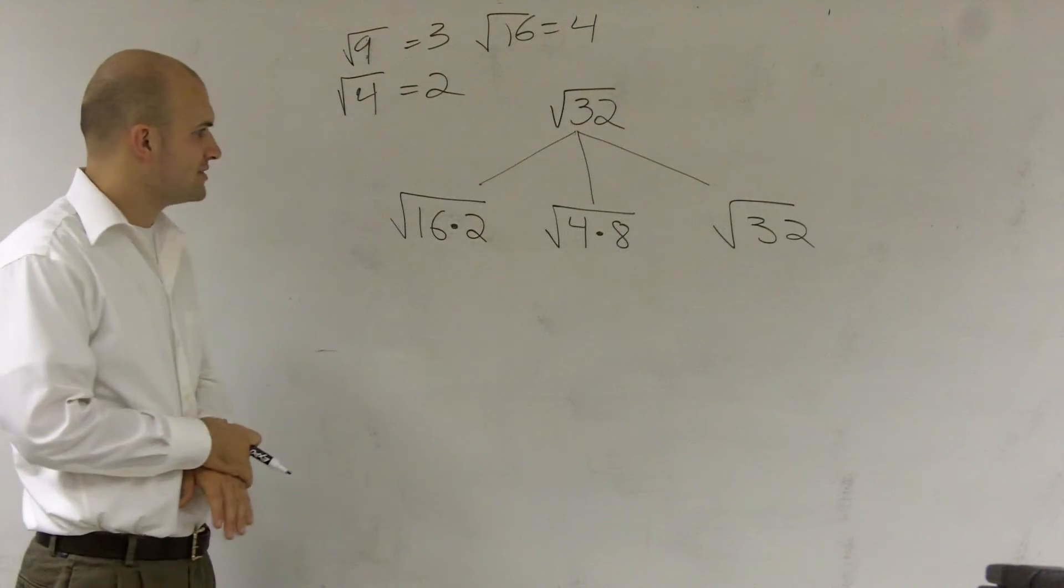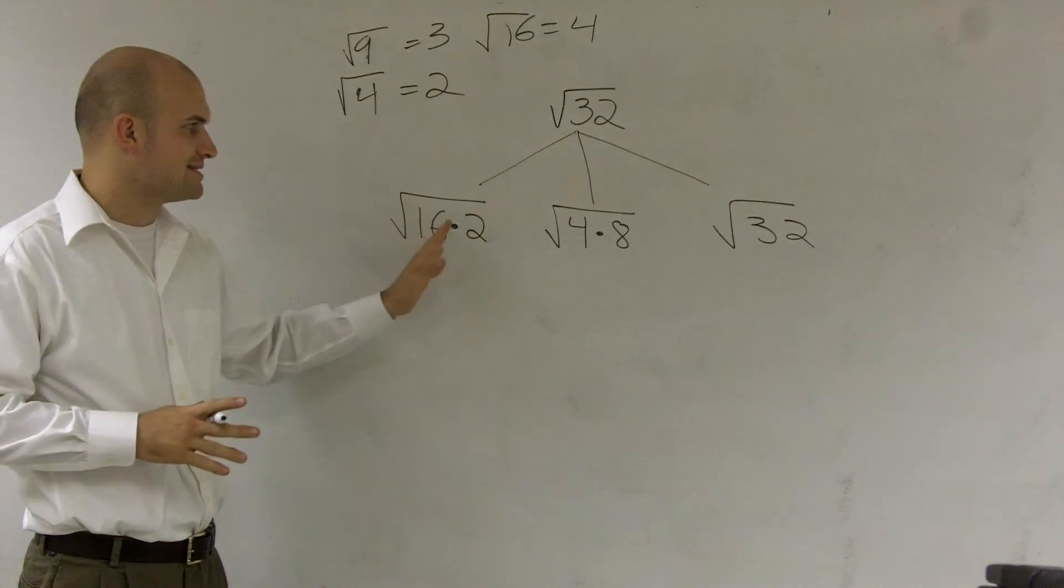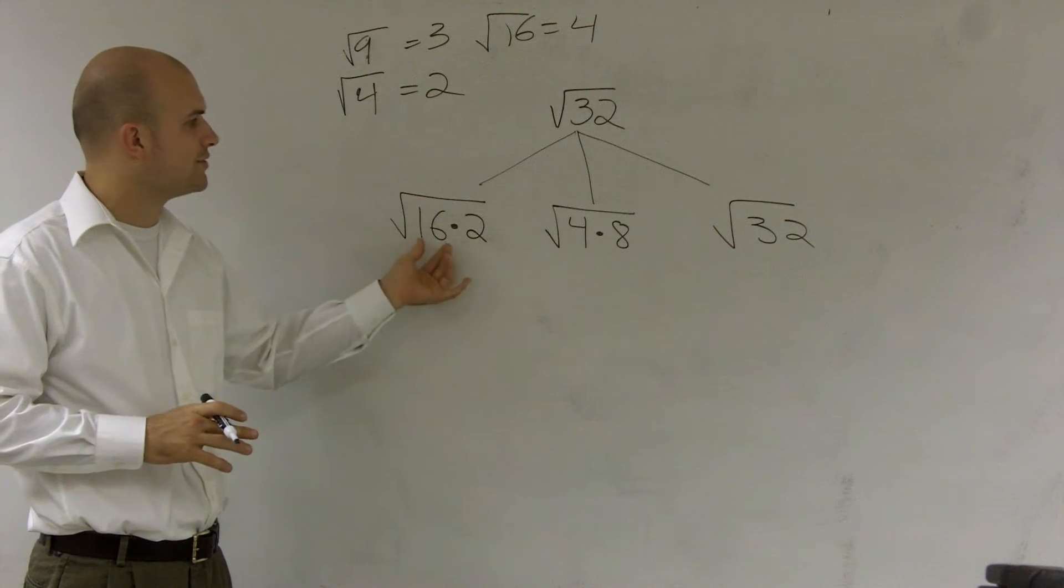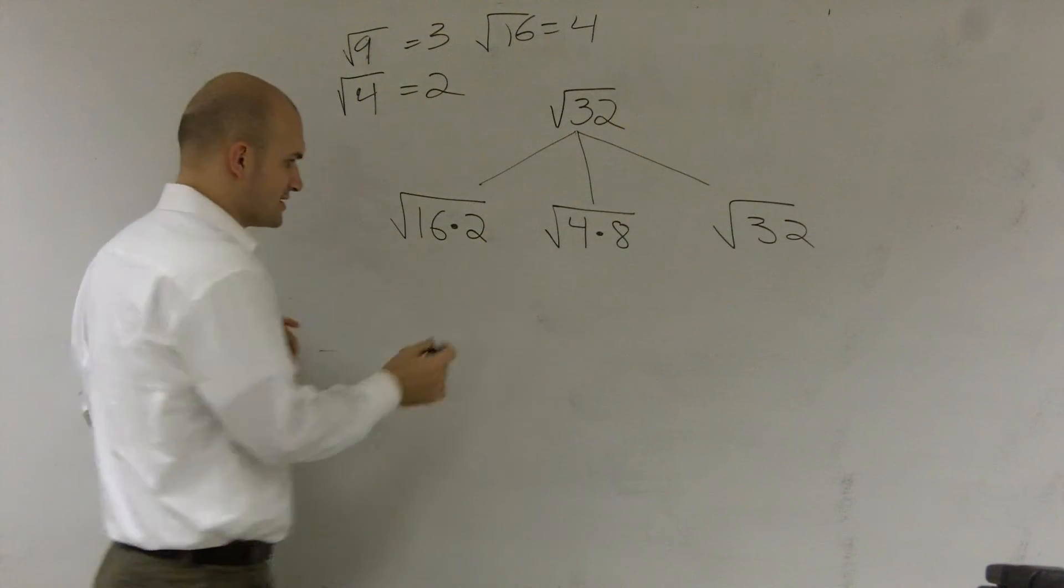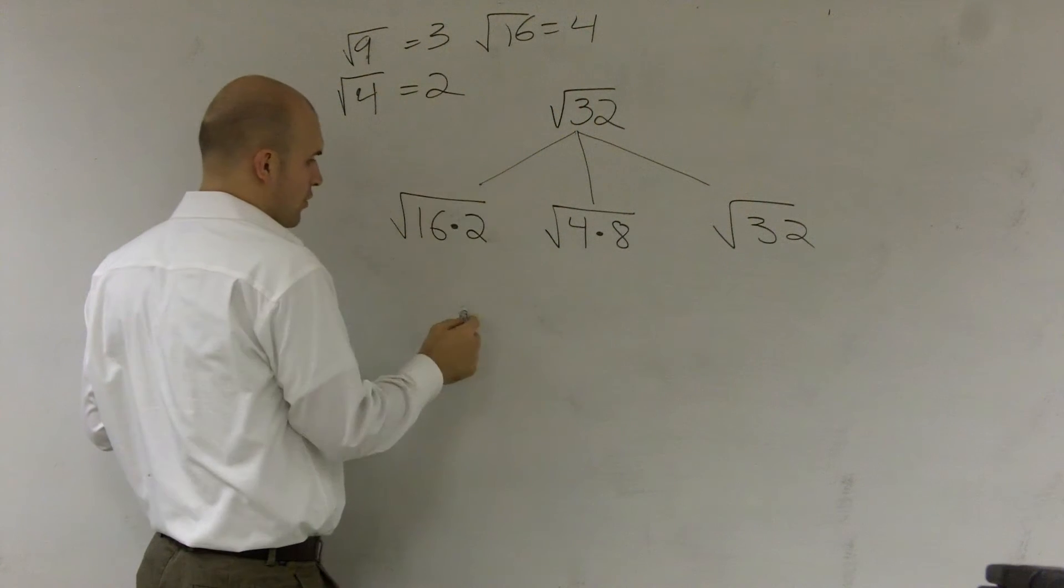And now what I'm going to do is I can separate these individually. Whenever you have a square root and two numbers are multiplied, you can separate them out. And I'll show you an example. Let's not look at 4. Let's look at 36.